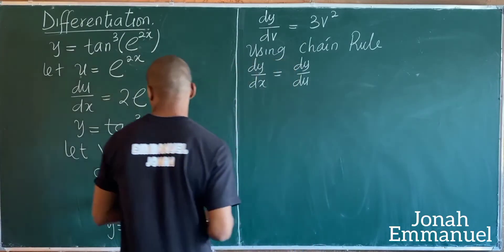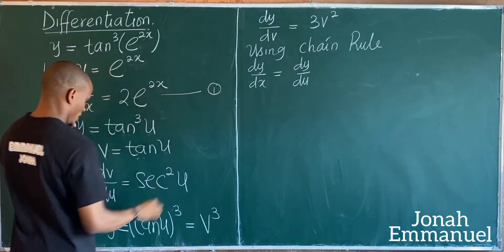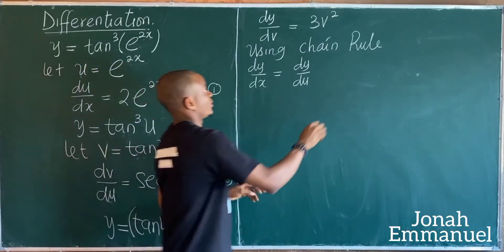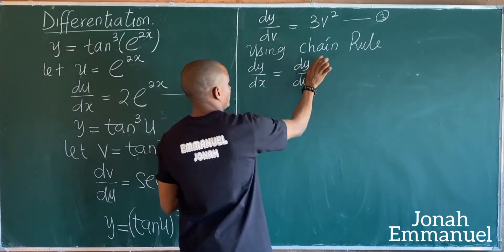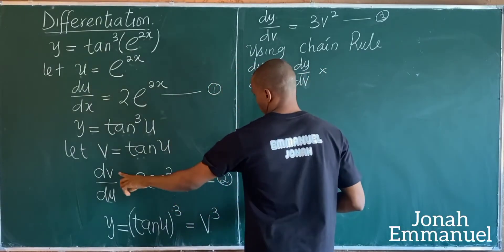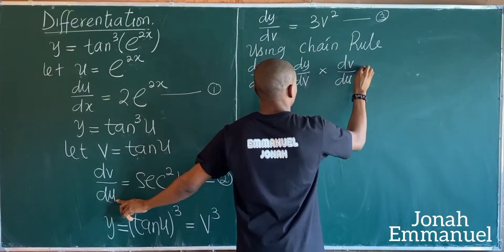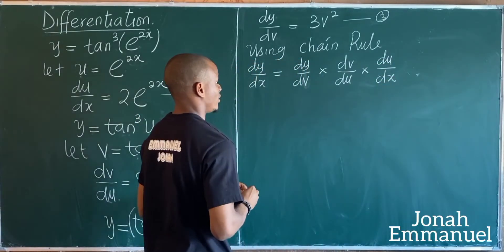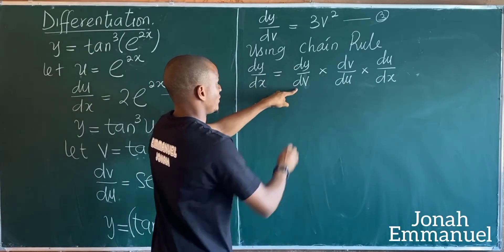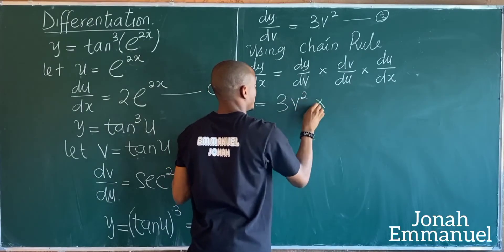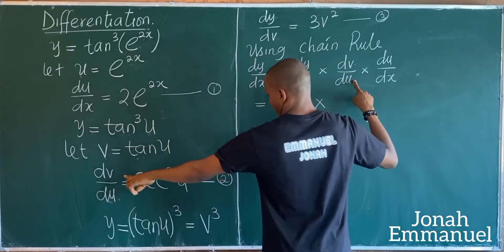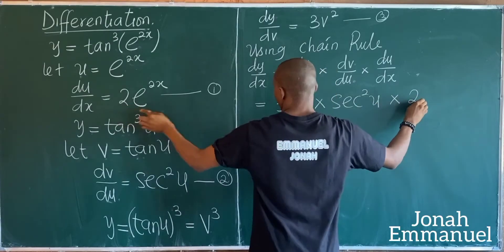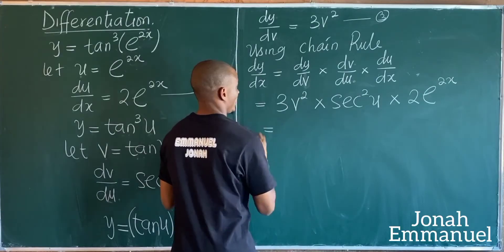I have three differential components. Substituting values: dy/dv is 3v squared, times dv/du which is sec squared u, times du/dx which is 2 exponential 2x. Multiplying constants: 3 times 2 gives 6.